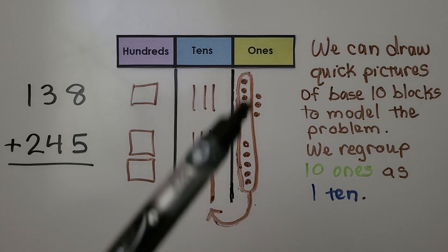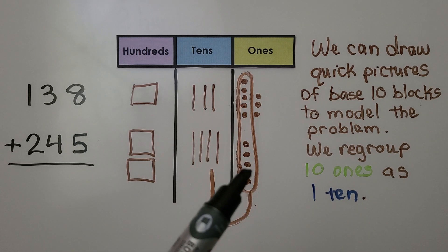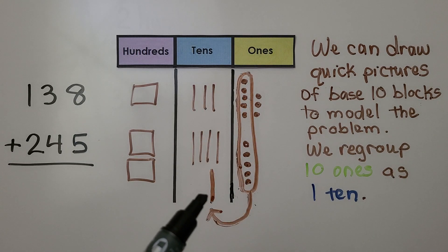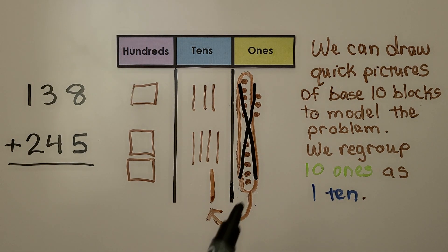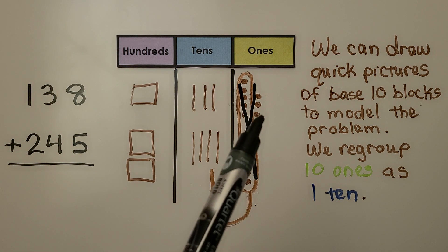We have five ones and five ones. We can circle them to make ten ones. We regroup it to the tens place. Then we cross it off of the ones place. We still have three ones.